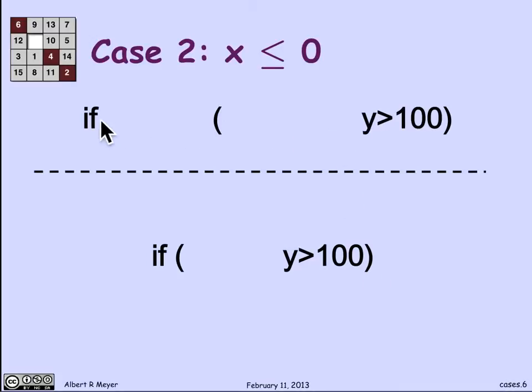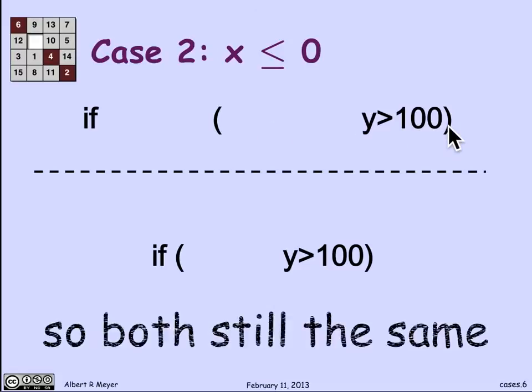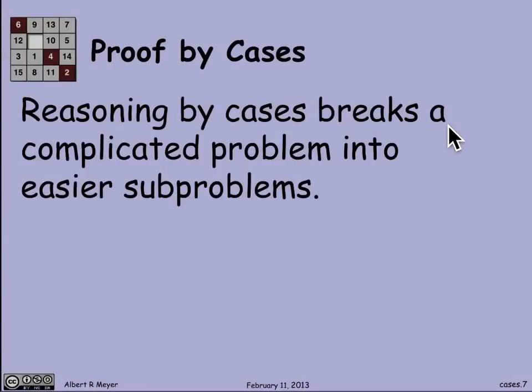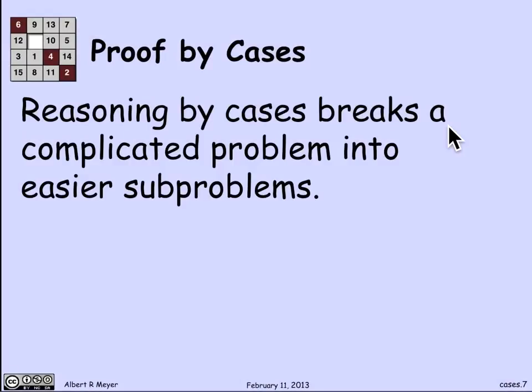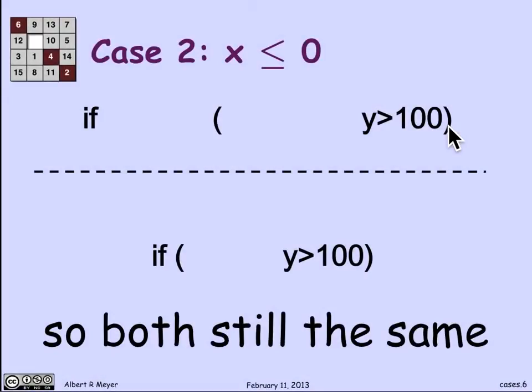I've argued that in this case, both of these test guards act like the test y greater than 100, which is they behave the same in this case as well. So what I just figured out was that in both cases, these two expressions yield the same result, which means, and the only possible cases are that x is greater than 0 or x is less than or equal to 0. So in all cases, they're the same. And we're done.